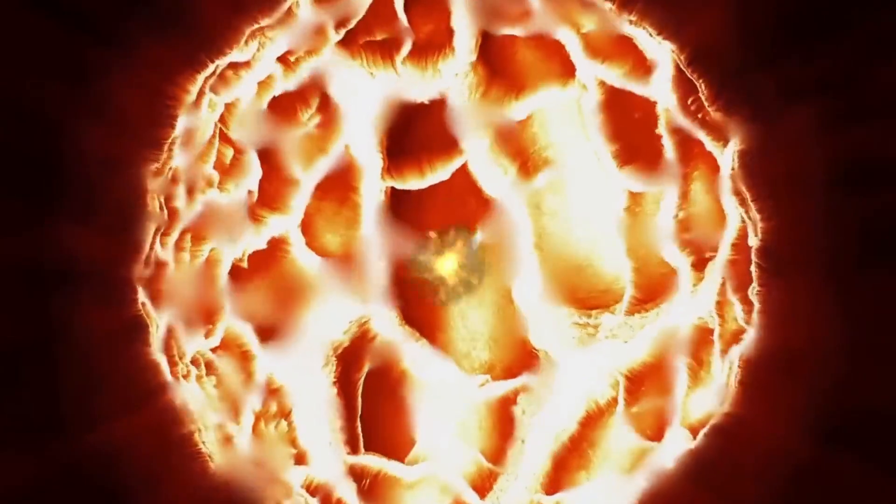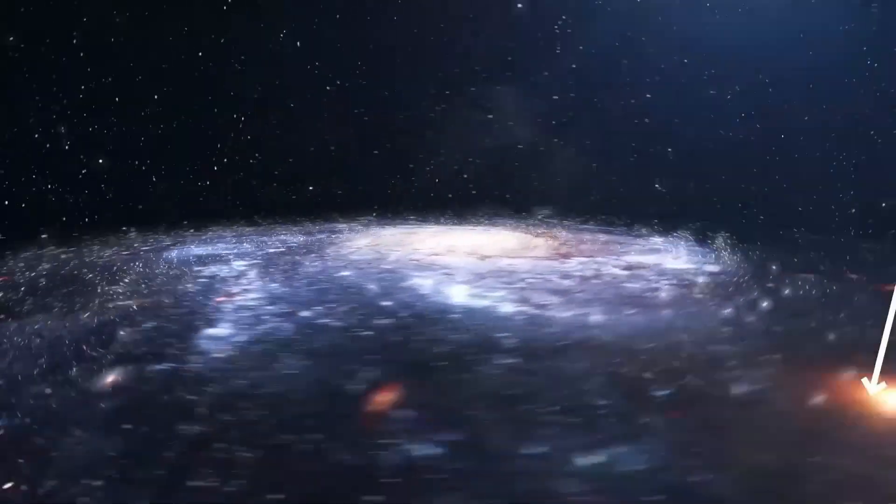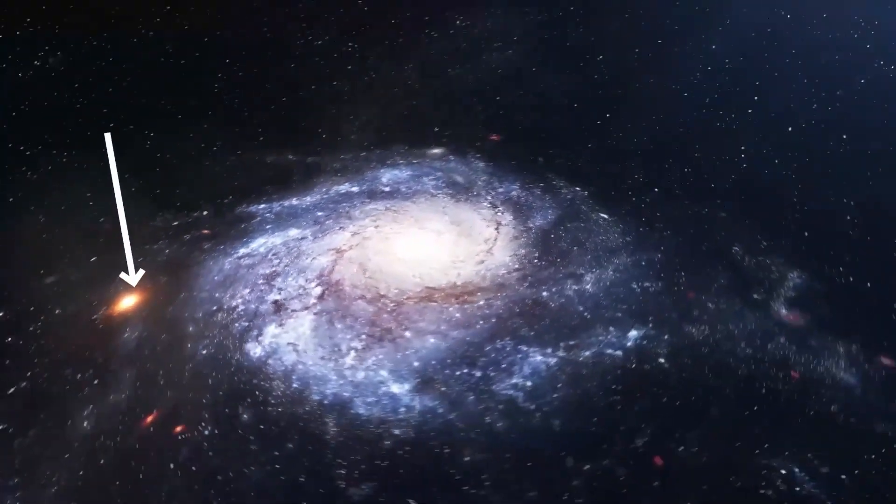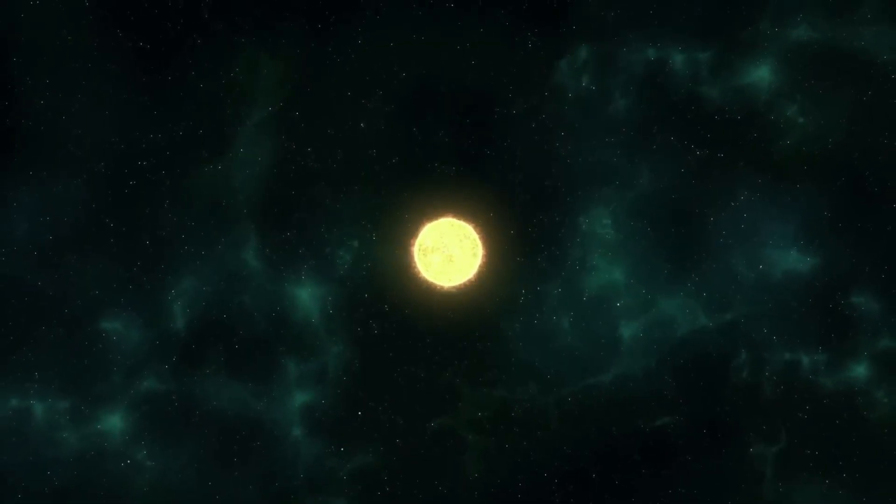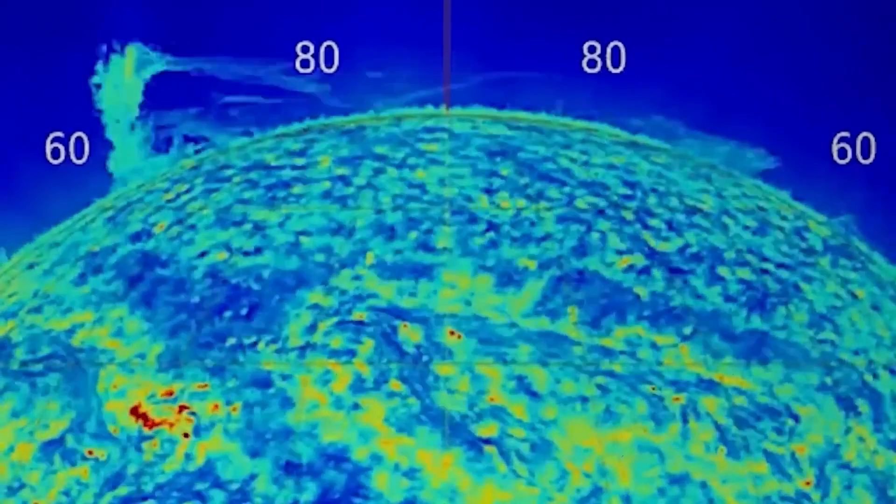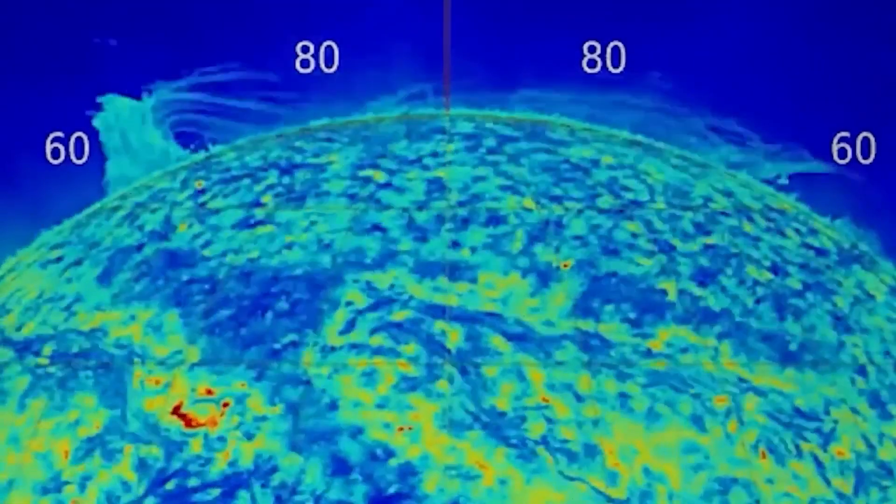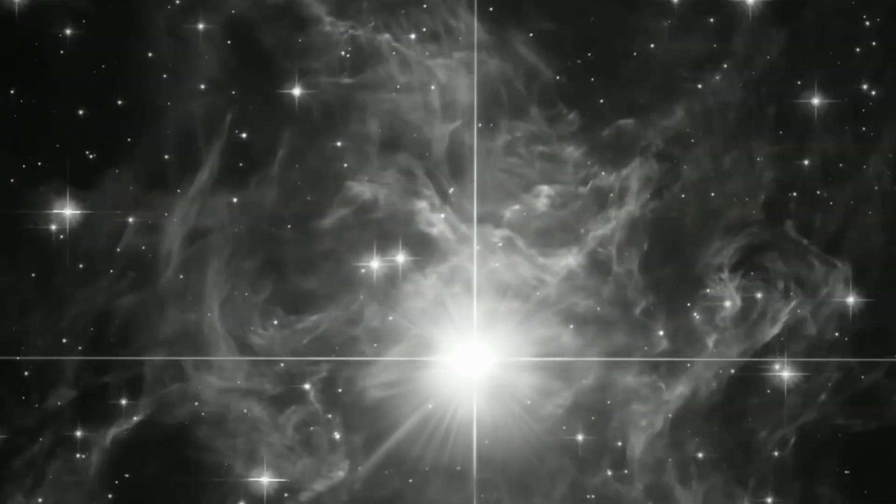Sometimes, it almost matches the brilliance of Rigel, the fourth brightest star in Orion, and at other times, it decides to be a bit shy and dims down. This light show is caused by pulsations, not as grand as Mira's, but still worth an astronomical round of applause.